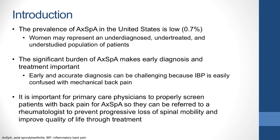The significant burden of axial SPA and its related comorbidities make early diagnosis and treatment important for affected patients. Early recognition and diagnosis of axial SPA is challenging because inflammatory back pain—the hallmark of the disease—is easily confused with mechanical back pain. Therefore, it is important for primary care physicians to properly screen patients with back pain for axial SPA so that they can be appropriately referred to a rheumatologist, in order to prevent progressive loss of spinal mobility and improve the patient's quality of life through treatment.